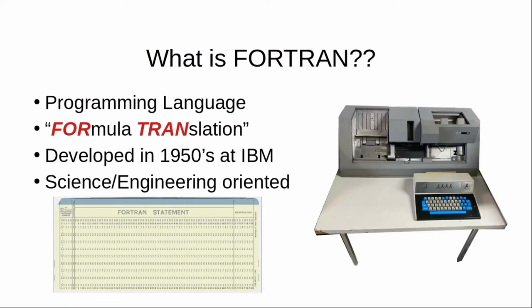So let's step back and see what really is Fortran. Fortran is a programming language, and the name Fortran is derived from formula translation. As you can probably guess from that name, it was developed as a scientific and engineering programming language, way back in the 1950s at a company called IBM — International Business Machines. IBM was the leader of the world in mainframe large computers. Basically, Fortran is a programming language developed about 60 years ago, geared towards science, engineering, and research applications.